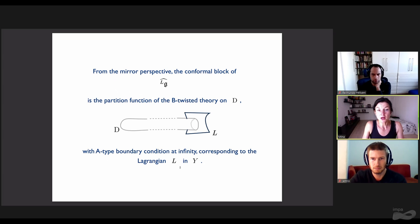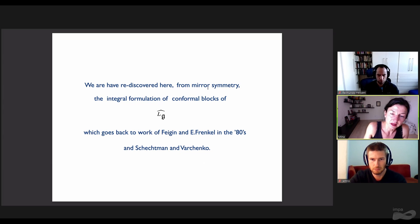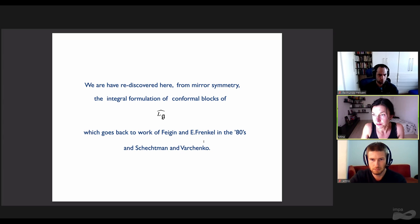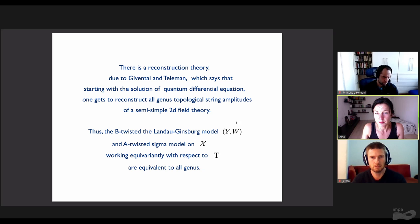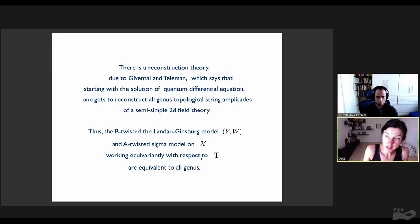Including the equivariant T-action corresponds to adding to the sigma model on Y a specific potential, which is a multivalued complex function. From the mirror perspective, conformal blocks are partition functions of the B-twisted theory on a very long cigar with an A-type boundary condition at infinity. The A-type boundary condition is simply a Lagrangian in small Y. Such amplitudes have the form of an integral involving a top holomorphic form on Y, the Landau-Ginzburg potential W, and insertions of chiral ring operators. So what we are rediscovering from mirror symmetry is the integral formulation of conformal blocks of the affine algebra, known from works of Feigen-Frenkel in the 80s and also Schechtman-Varchenko. There is a reconstruction theorem which says that starting with a solution of the quantum differential equation, one gets to reconstruct all genus topological string amplitudes of any semi-simple or massive 2D theory. So the B-twisted Landau-Ginzburg model and the A-twisted sigma model to the big X, working equivariantly with respect to T, are equivalent.